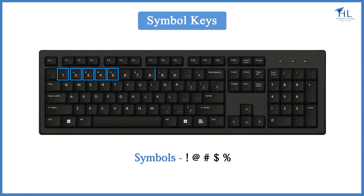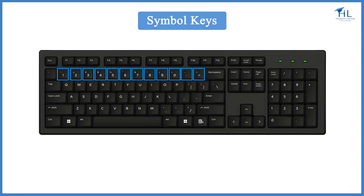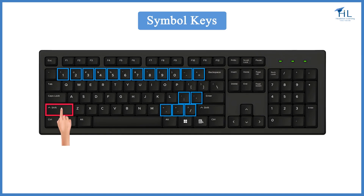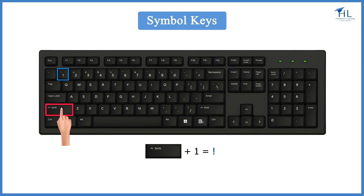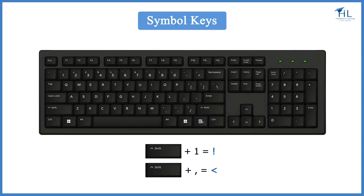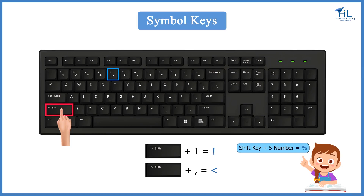Other symbols on number keys include asterisk, etc. As you can see, some keys have two symbols and some have a number and a symbol on them. To type the upper symbol, you need to press and hold the Shift key along with the symbol or number key. For example, Shift plus 1 gives exclamation, and Shift plus comma gives less than. Can you tell me what symbol you get by pressing number 5 and Shift? Yes ma'am, we will get the percentage symbol. Correct!